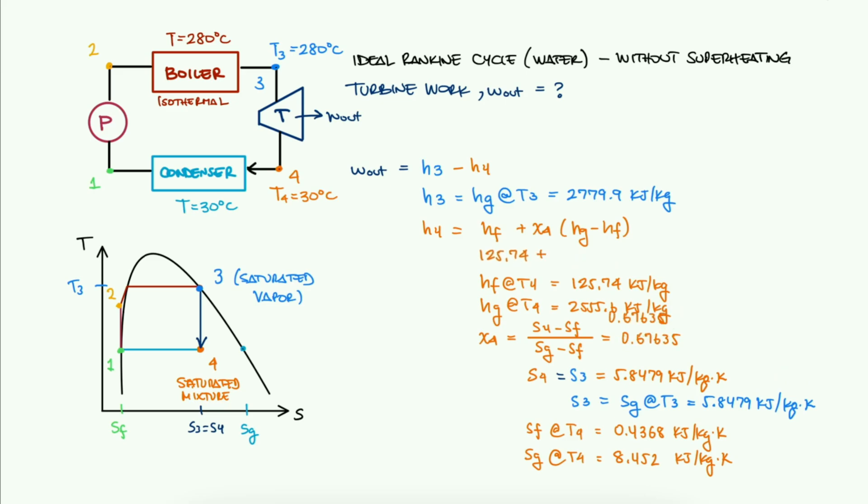After finding the quality at 4, we substitute to find the specific enthalpy at 4, and with this H4 value and the previously found H3 value, we get the specific work that the turbine produces.